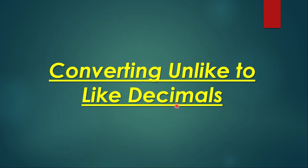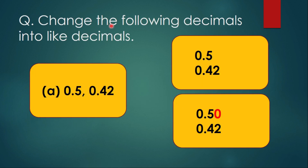Now let us see some questions on converting unlike to like decimals. The question says: change the following decimals into like decimals. We have 0.5 and 0.42. Here 0.5 has only one digit in the decimal part and 0.42 has two digits. The maximum number of digits is two, so we insert one zero into 0.5, making it 0.50. Now both 0.50 and 0.42 have two digits in the decimal part — they are like decimals.